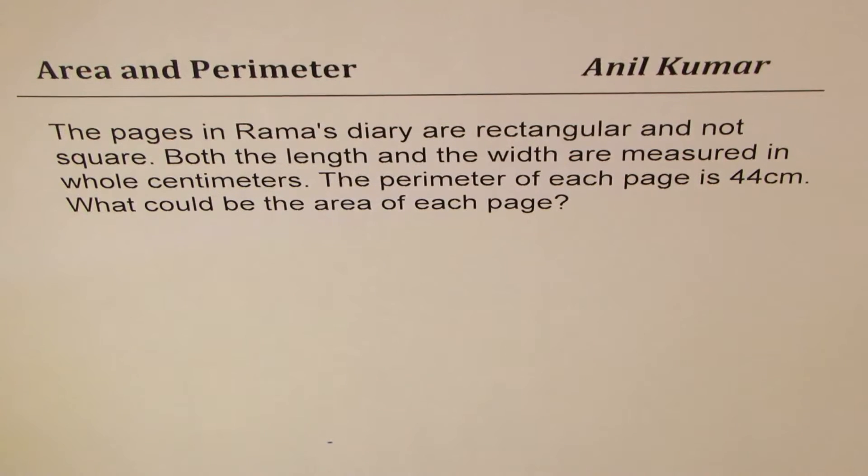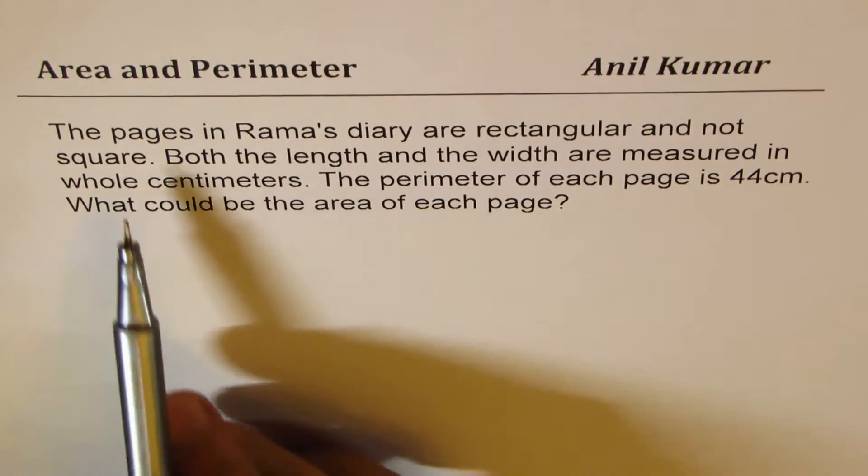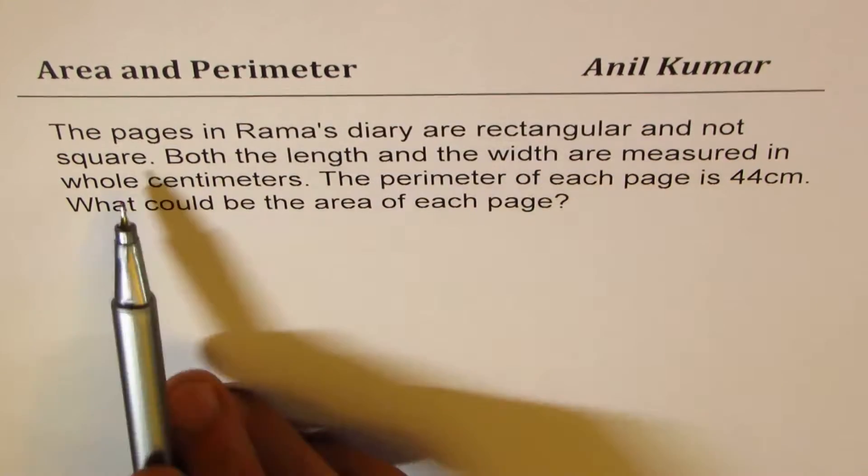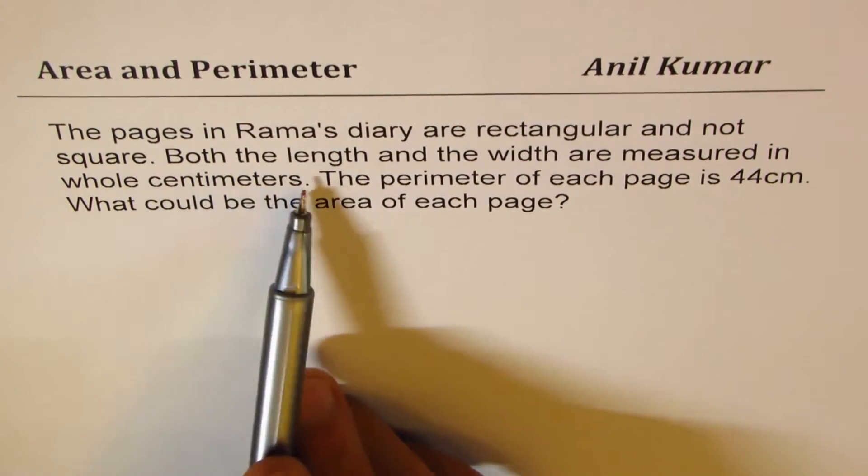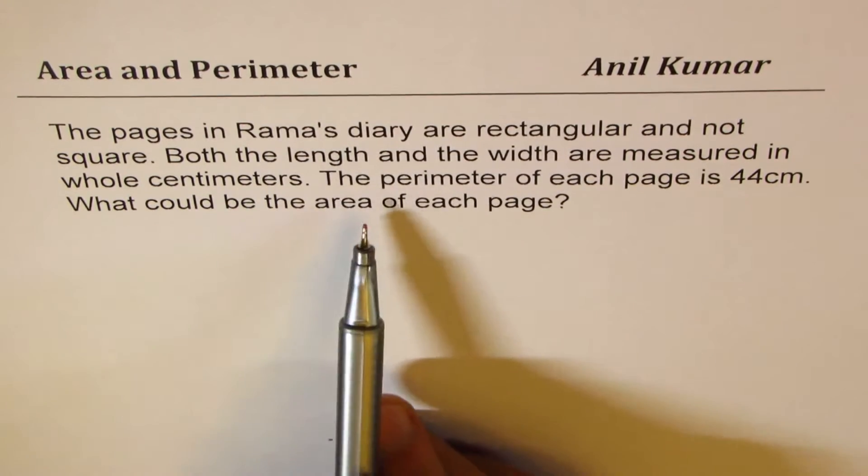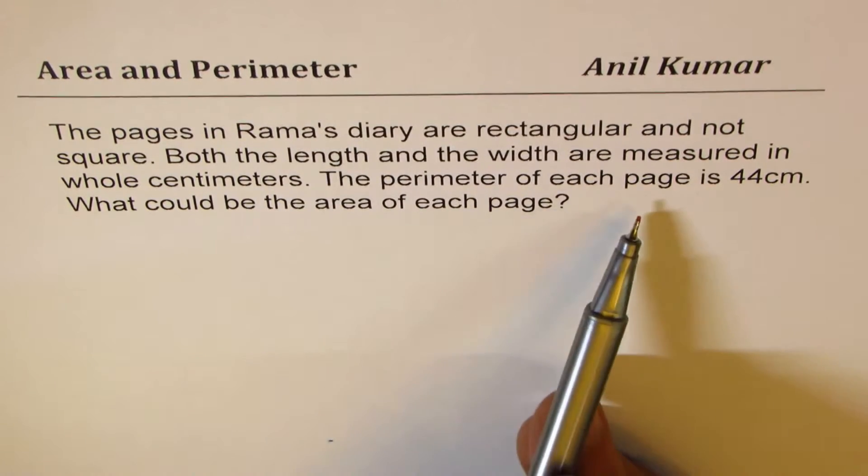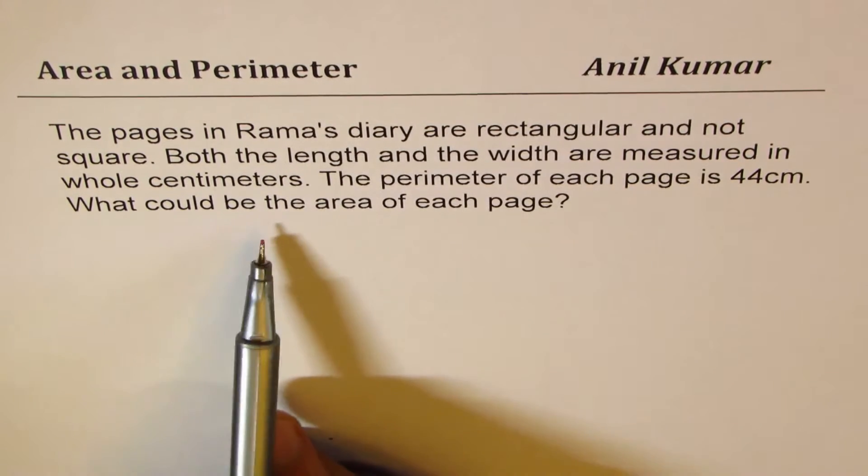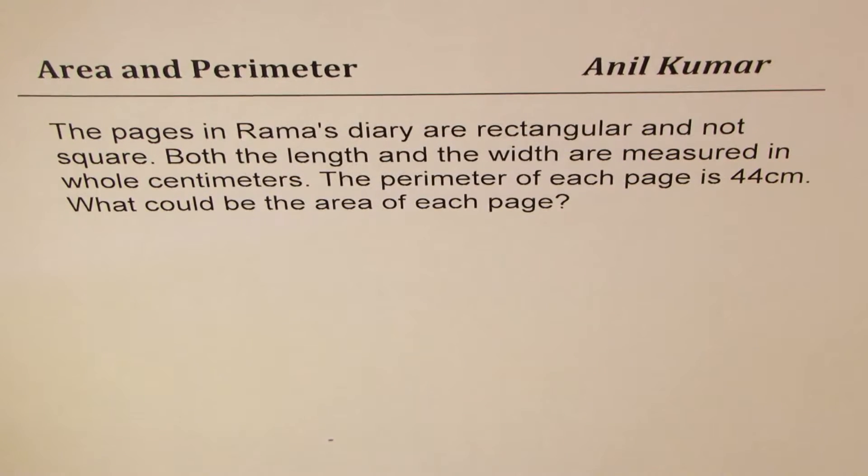I'm Anil Kumar sharing with you solution of a question from my subscriber. The question here is the pages in Rama's diary are rectangular and not square. Both the length and the width are measured in whole centimeters. The perimeter of each page is 44 centimeters. What could be the area of each page?